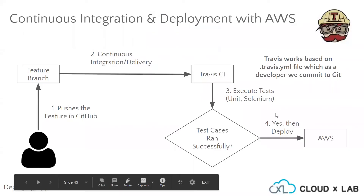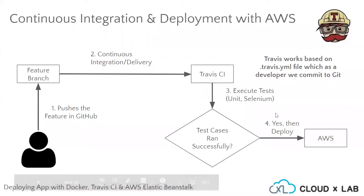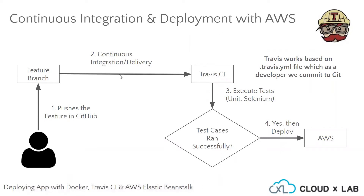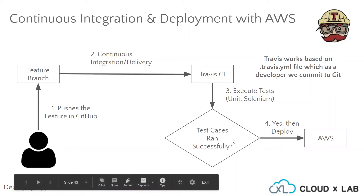Let us have a look at the workflow of Travis. Whenever a feature is pushed onto the GitHub branch, this is tracked by Travis CI using the YAML file. This is the continuous integration or delivery step. Then it executes some test cases on the code. If they run successfully, they deploy onto AWS as mentioned in the Travis file.